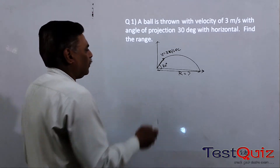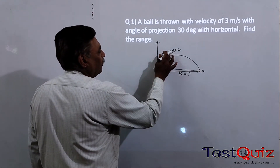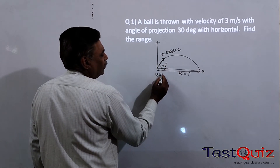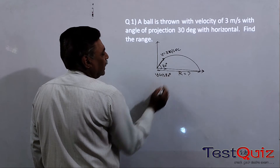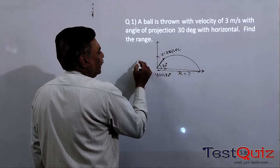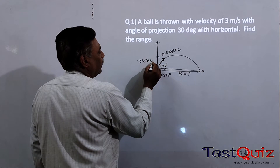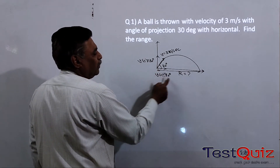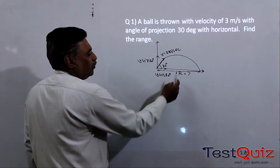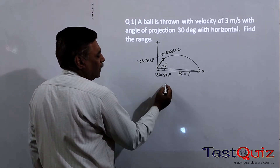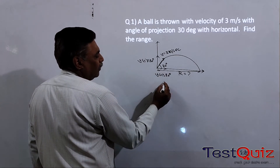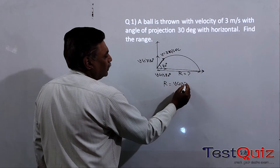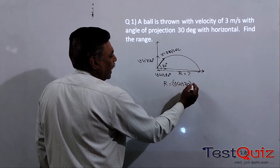We can split the velocity into two components. The x component is V cos 30 and the y component is V sin 30. The x component is constant. So the range R equals V cos 30 multiplied by the time of flight.